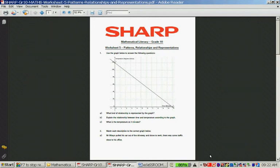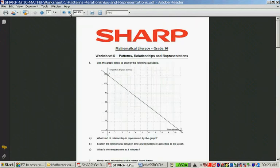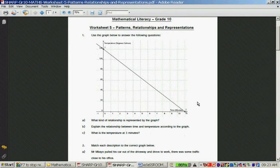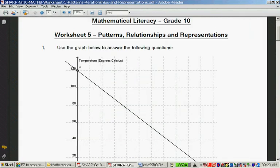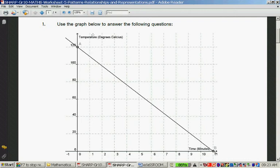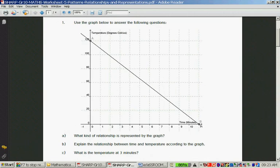Alright, so the first question. Use the graph below to answer the following questions. So here we have a graph. Let's zoom in a bit. It says temperature degrees Celsius. This is the name of this axis. We can also put that heading here. This is the time in minutes. It can also be horizontal.